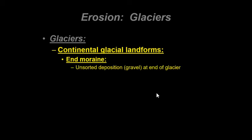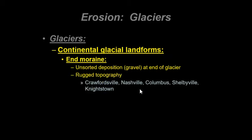Everything is pushed along what we call an end moraine. An end moraine is unsorted deposition — it's going to contain a lot of gravel at the end of a glacier. What I mean by unsorted is that a glacier doesn't care what it is. It's going to carry a huge boulder, a one-ton rock — it's going to carry it. Wherever the ice eventually gets to a more southerly location, it's going to start to melt and just drop that sediment behind. So along a continental glacier boundary, at the extent of it, we often have an end moraine — very rugged topography.